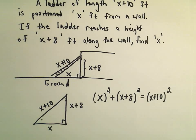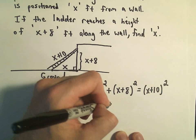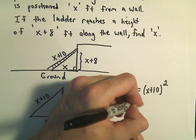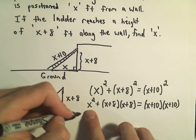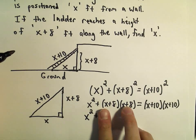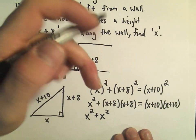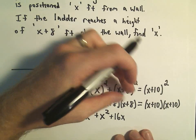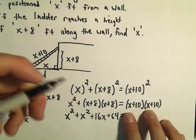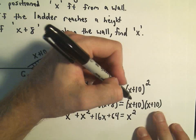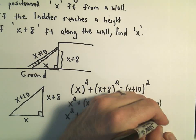Now we've got an equation that we're going to have to do our arithmetic on. x squared is just x squared. I'm going to write this out as x plus 8 times x plus 8 to remind myself I have to distribute, and we've got x plus 10 times x plus 10. When I distribute, I'll have x times x which gives me x squared, x times 8 is 8x, another 8x from the inside giving us 16x, and 8 times 8 is positive 64. On the right-hand side, x times x is x squared, x times 10 is 10x, another 10x on the inside giving 20x, and 10 times 10 is positive 100.